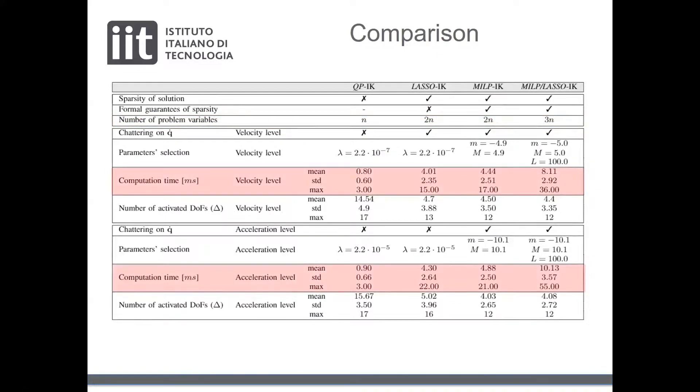Secondly, notice the control rate of the classic method which is under the millisecond to solve the whole stack, while the sparse methods need up to 10 times more to solve the same stack. This is mainly due to the higher number of variables and to the employment of a MILP solver.